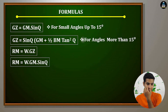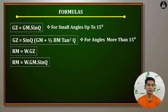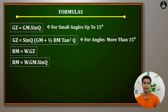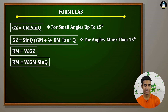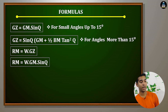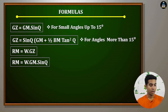There are some formulas we will use in the numericals. GZ = GM × sin θ. This formula is applicable for small angles of heel up to 15 degrees or small angles of list up to 15 degrees — 15 degrees is the important limit, whether it is list or heel. For angles more than 15 degrees: GZ = sin θ × (GM + ½ BM tan²θ). Next, RM (righting moment) = displacement × GZ, that is the righting lever. So RM = W × GM × sin θ.